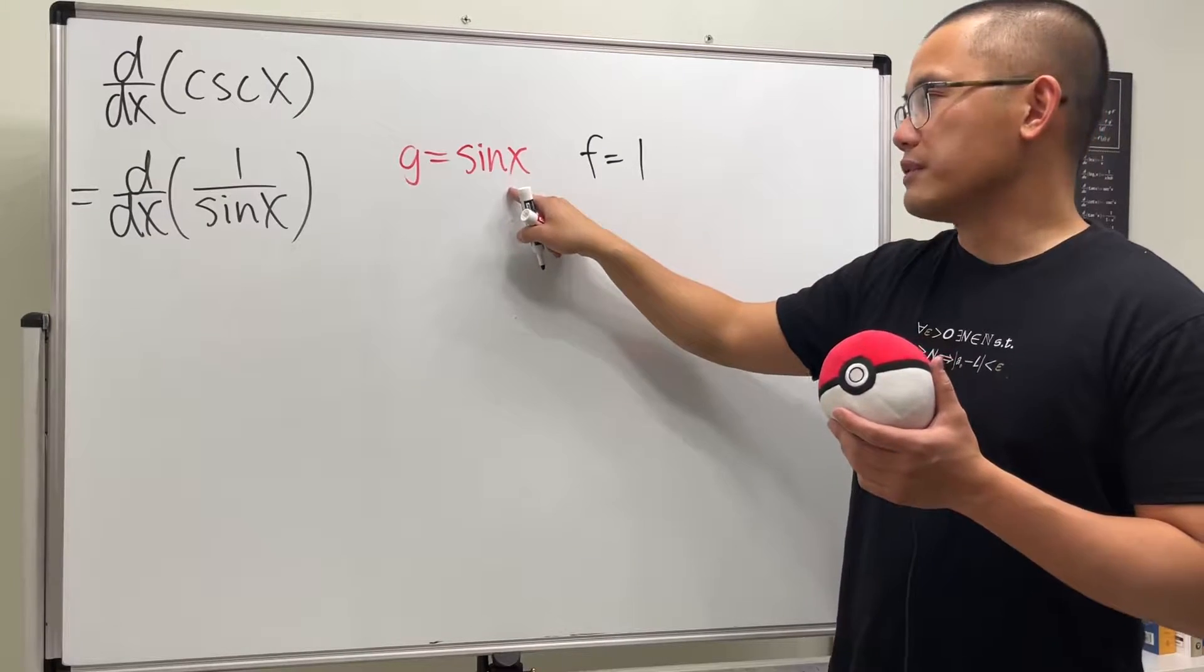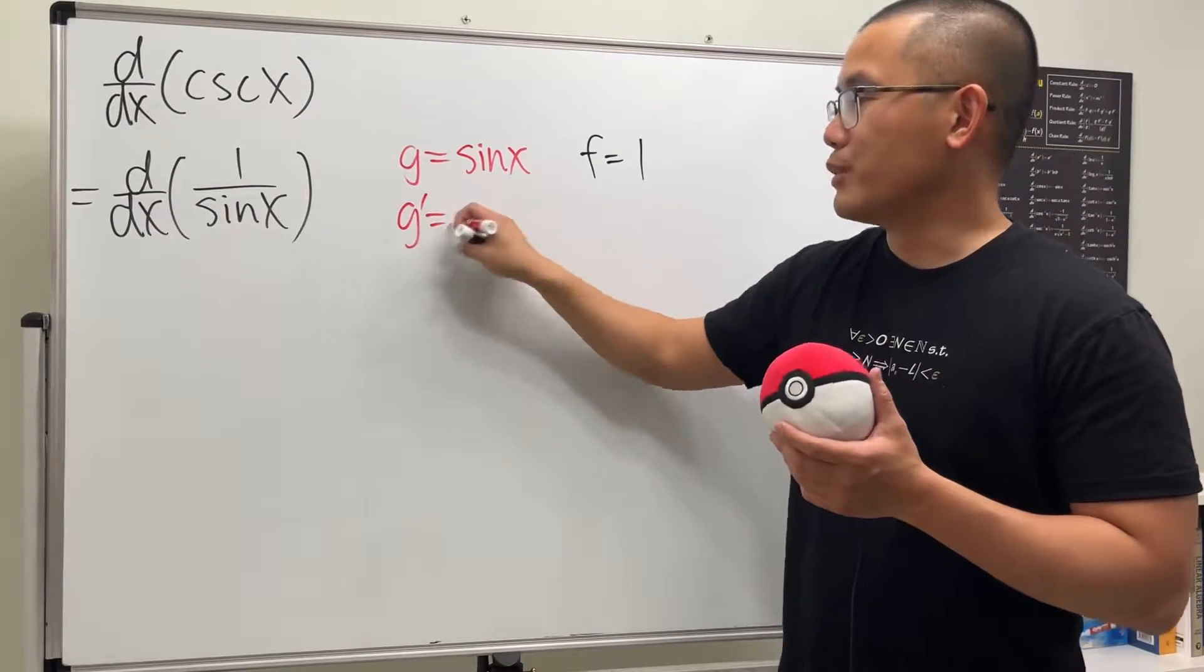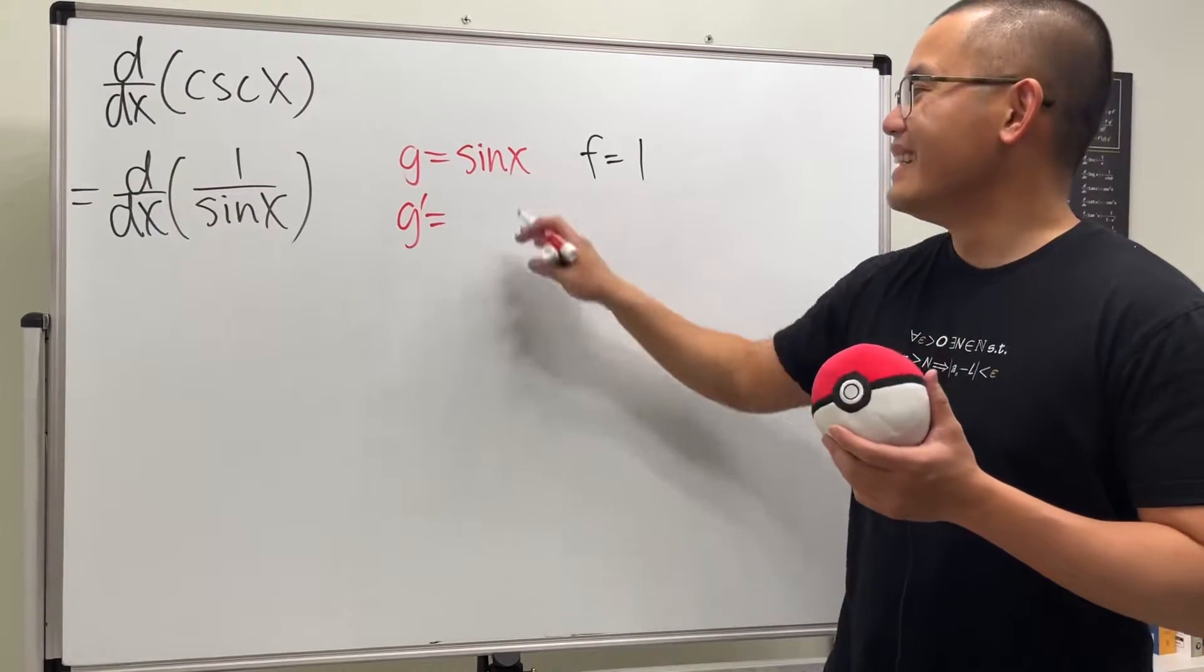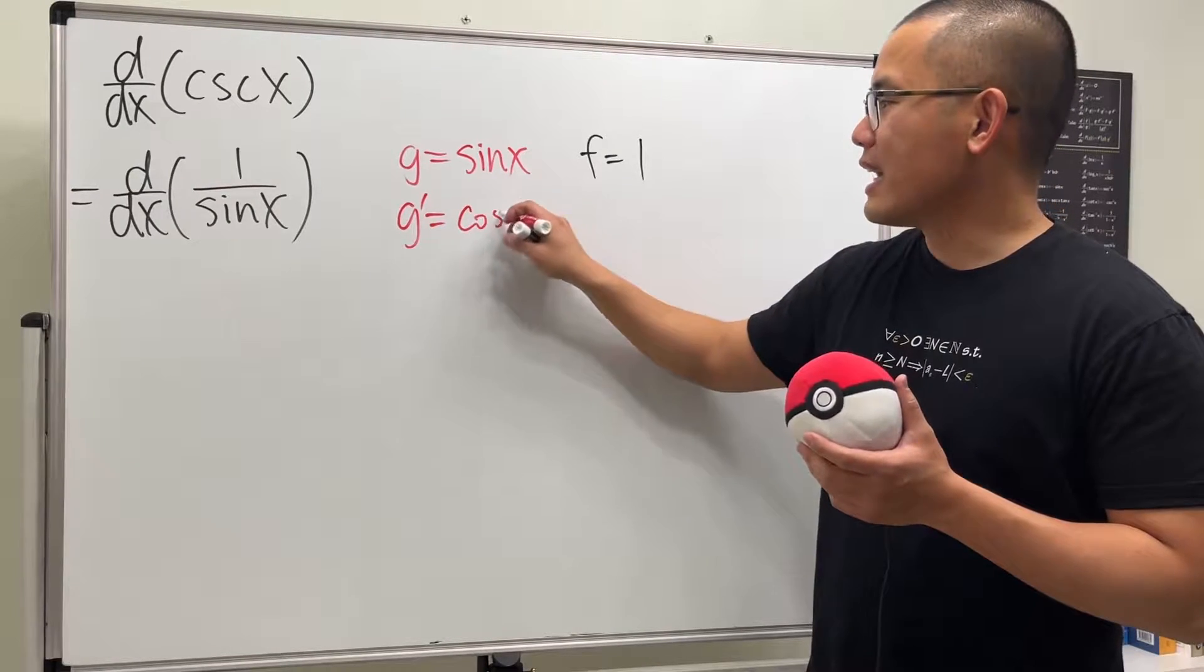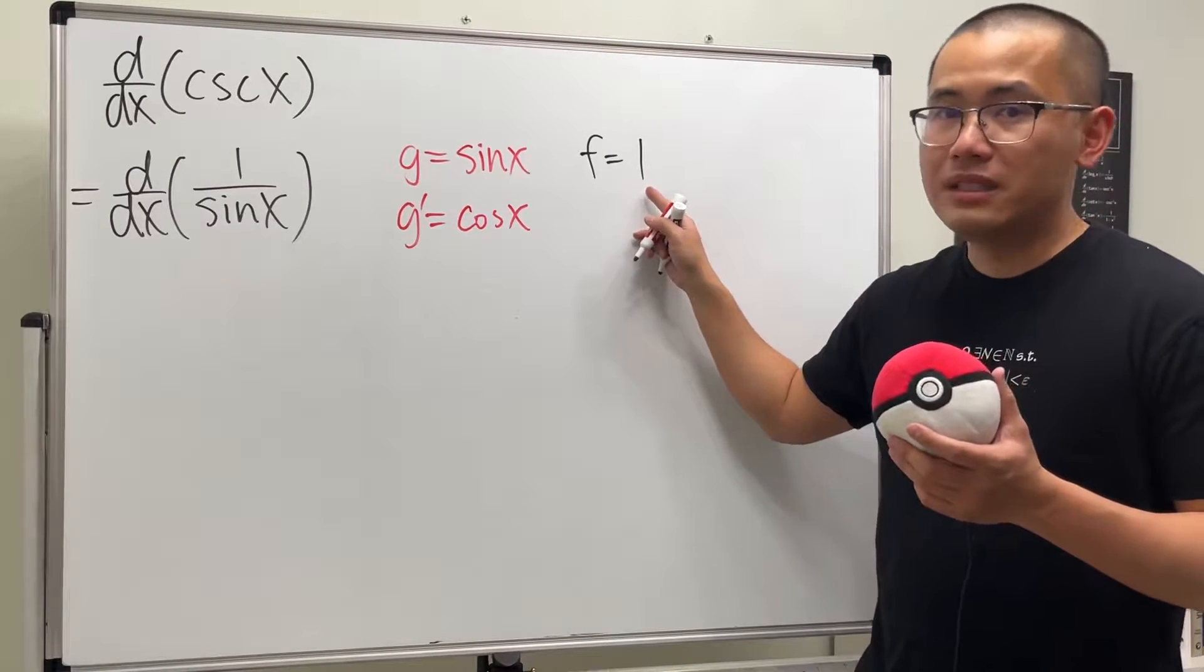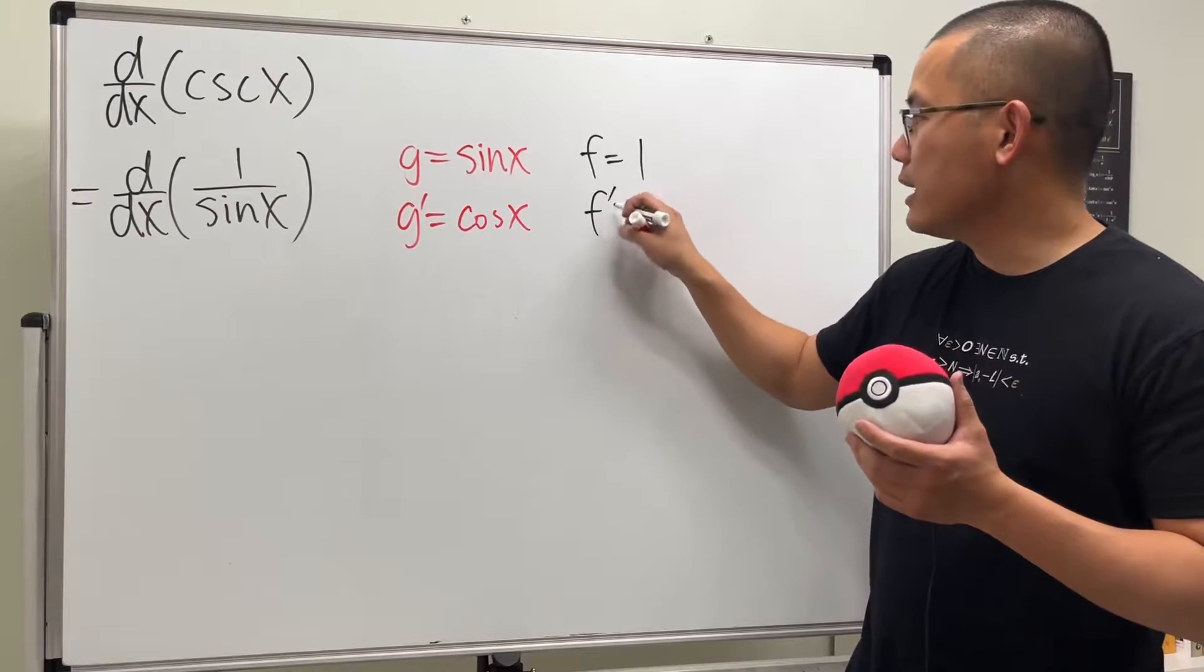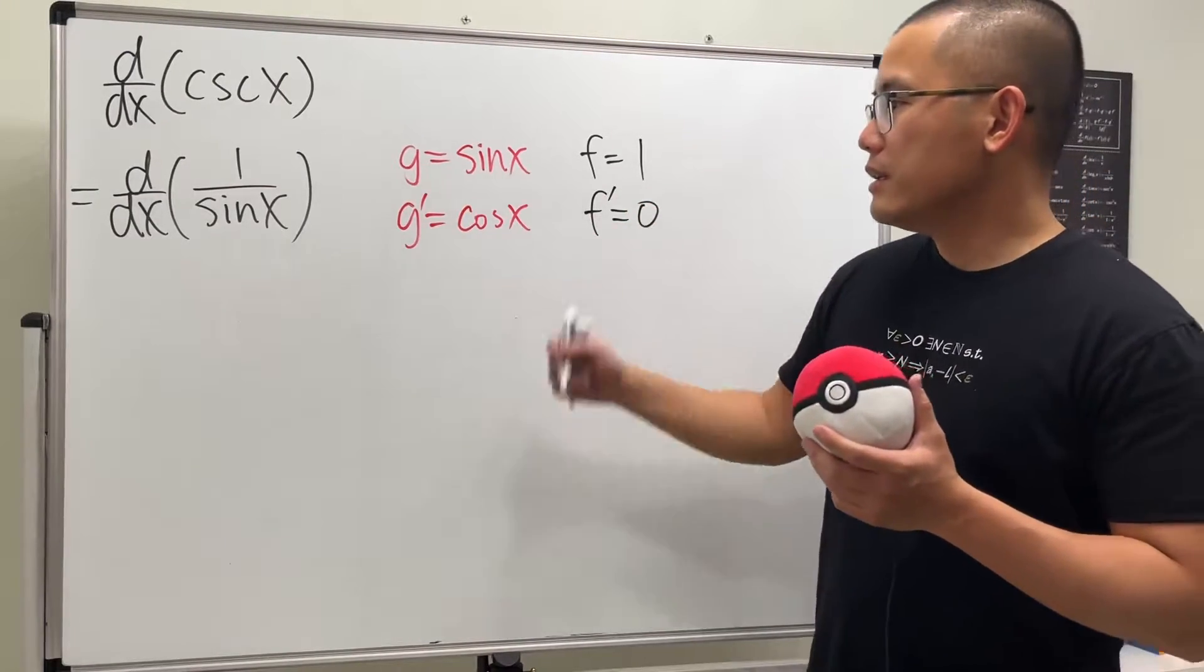Okay, to take the derivative of sine x, well, just remember your derivative—we did that already—that will give us cosine x. And then the derivative of 1 is 0, so that will be nice. Okay, here we go.